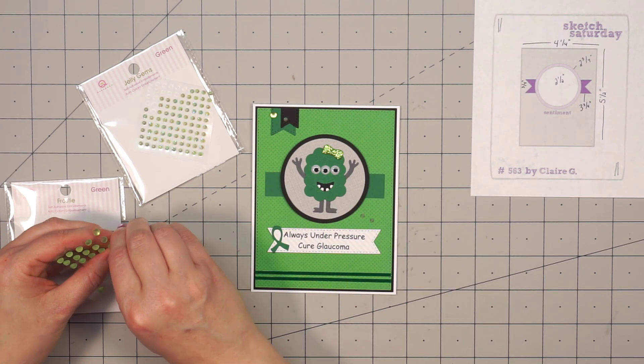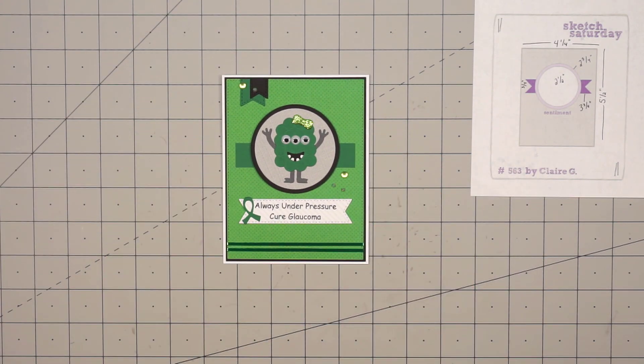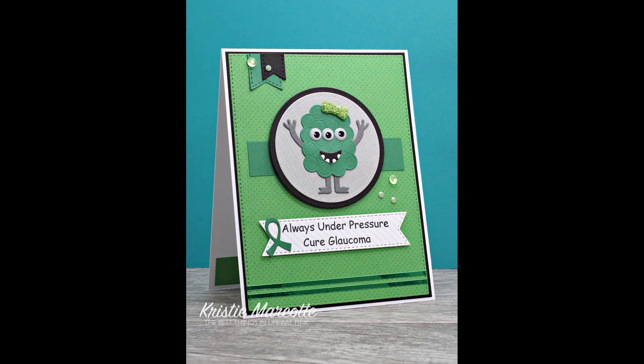So to finish off this card, I used some of Queen & Company's Bling. I have some of their Frosties, and also their Jelly Gems. And there is the finished card, and I think this little monster turned out just adorable.